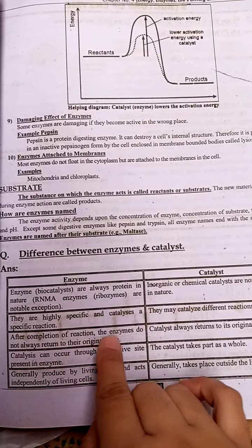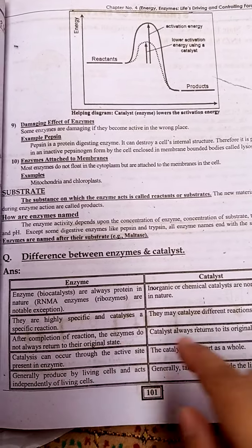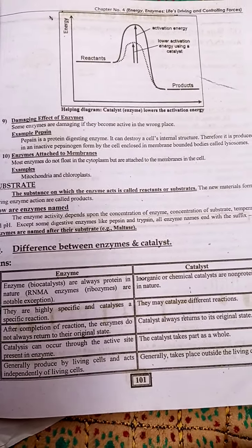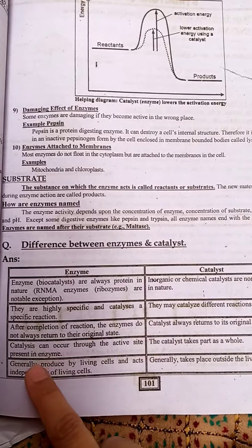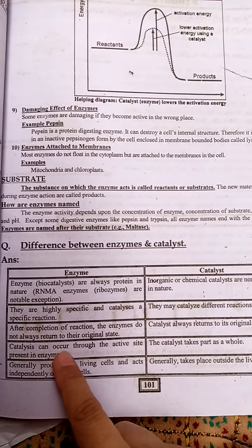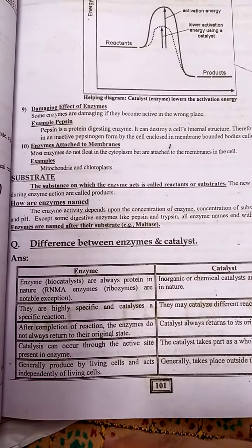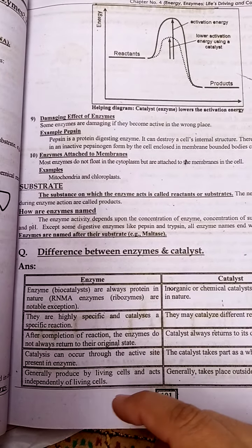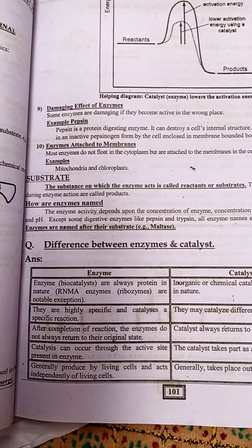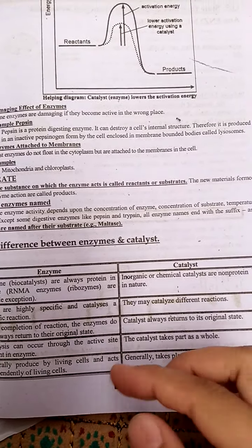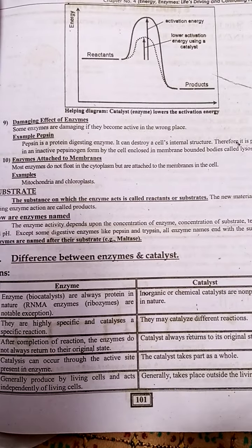After completion of a reaction, enzymes return to their original state and can be used again — unlike catalysts in some contexts. Catalysis in enzymes occurs through the active site present in the enzyme. If an enzyme is active in the wrong place, it can damage the reaction. Chemical catalysts can function in both active and inactive conditions.